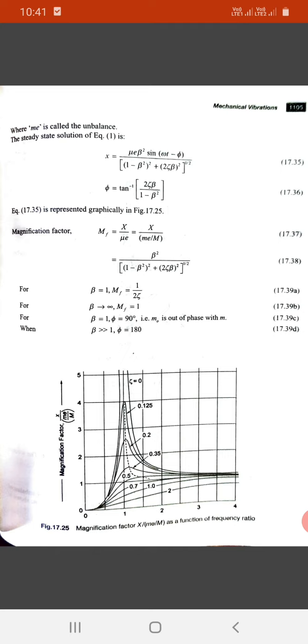For beta tending to infinity, MF is one. At beta equals to one, phase angle is 90 degrees.